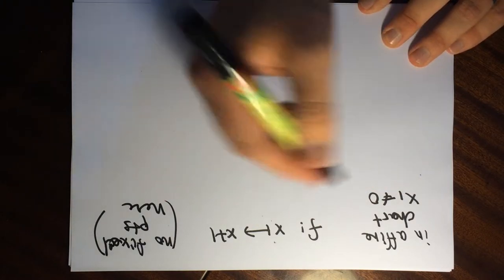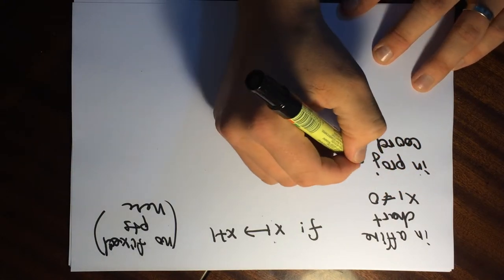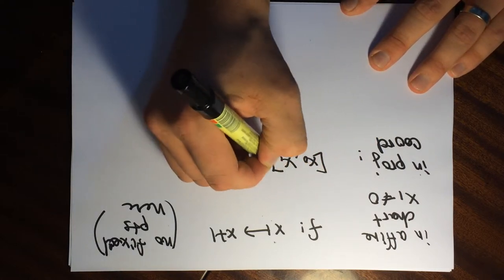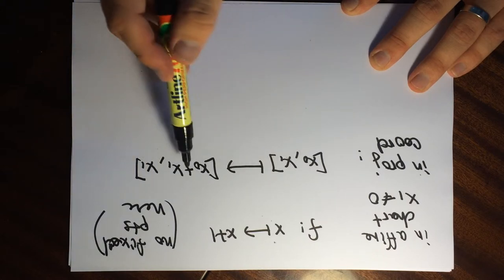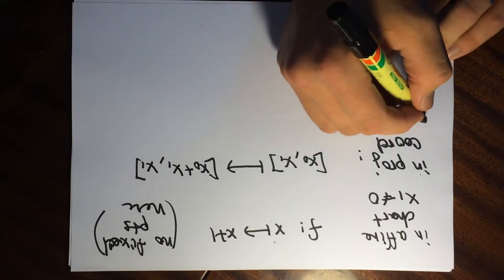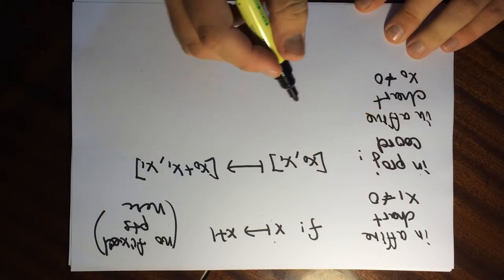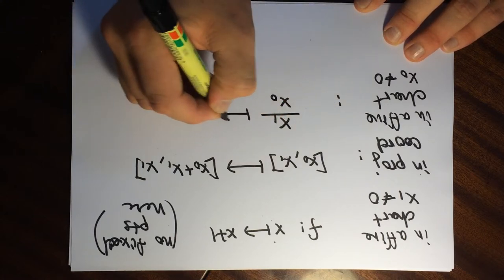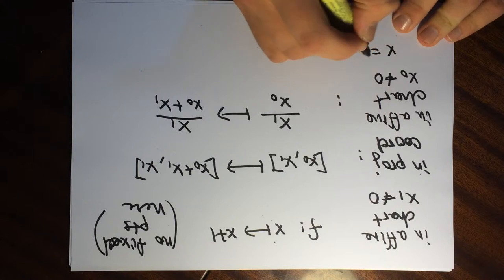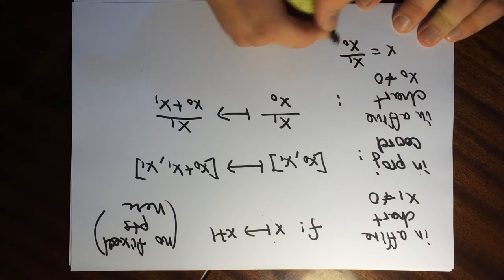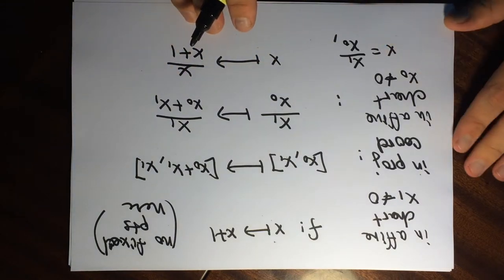In projective coordinates, the map sends (X₀ : X₁) to (X₀ + X₁ : X₁). In the affine chart where X₀ ≠ 0, we get that X₁/X₀ maps to X₁/(X₀ + X₁). If we let X = X₁/X₀, this becomes X maps to X/(X+1). So we need to compute the fixed points of this map in the chart at infinity.